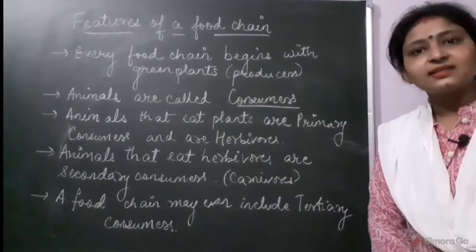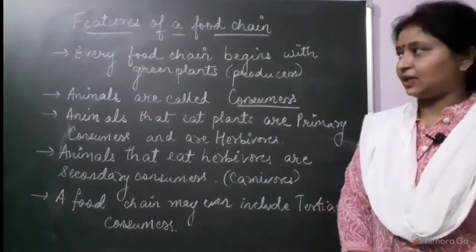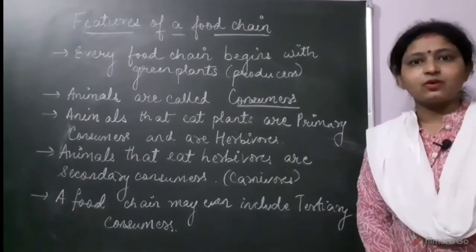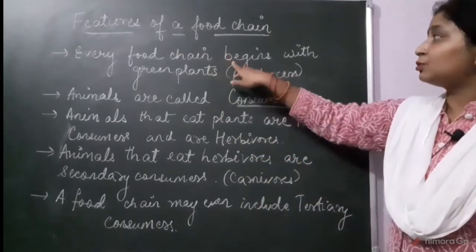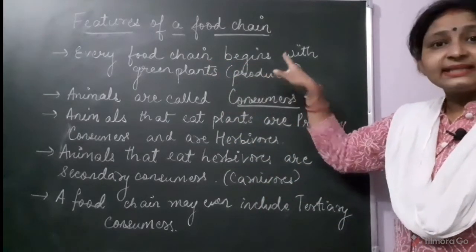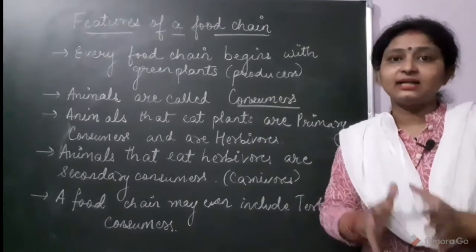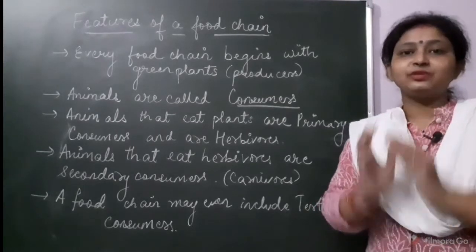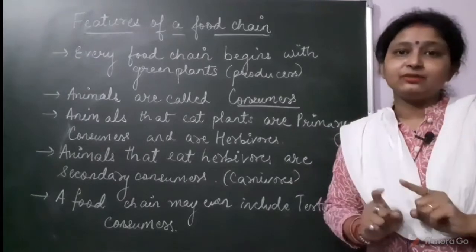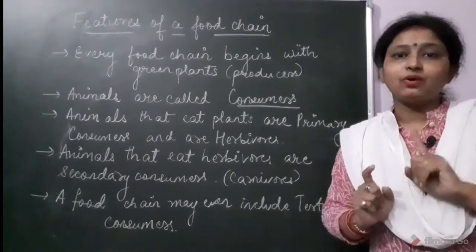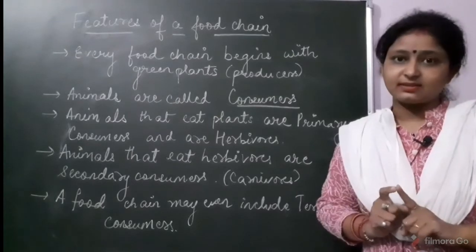Let's start with the features of food chain. The first characteristic of food chain is that every food chain begins with green plants, that is producers. Why? Because producers make the food with the help of inorganic compounds or inorganic substances.